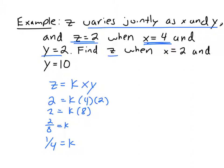So now find z when x equals 2 and y equals 10. So let's find z. So we have z equals 1 fourth times x times y. So this is the relationship between the three variables.